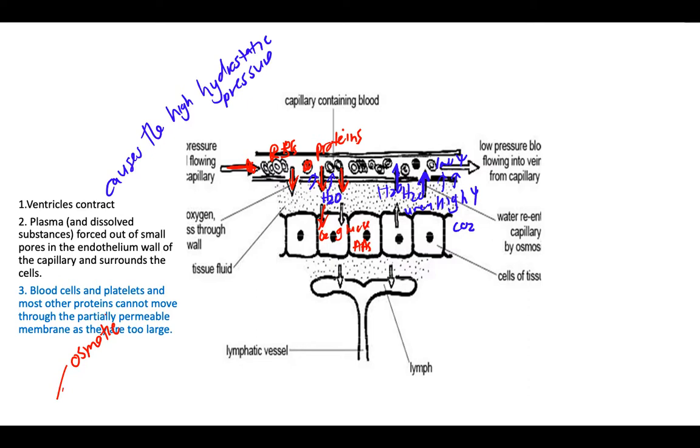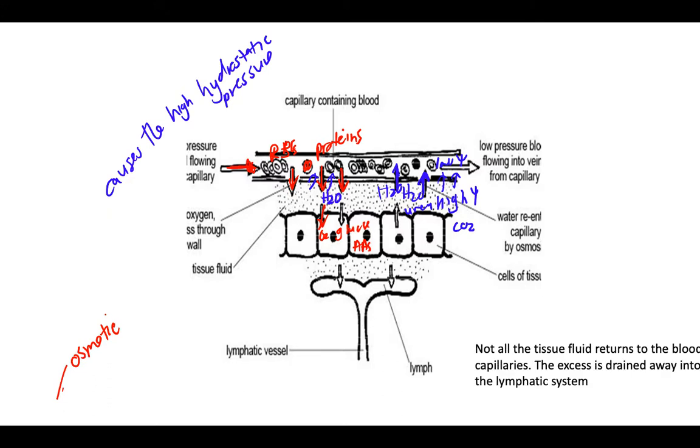Capillaries are really thin and small, so there's going to be excess fluid in the tissues because not all of it can go back into the capillary. The excess will be drained away in the lymphatic system, and we call the fluid here lymph.